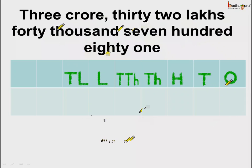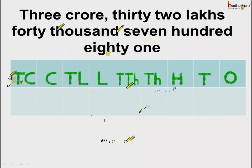We have the place values from 0 to 10 lakhs. Let us add a place for crore and the next place for 10 crores. So this is the place value chart starting from 1s, 10s, 100s, 1000s, 10,000, lakh, 10 lakhs, crore, and 10 crores. Let us start placing the digits. First, 3 crores — so 3 comes under crores.